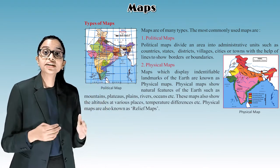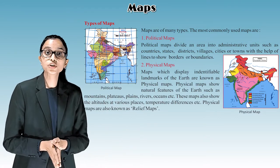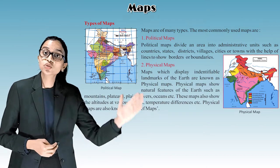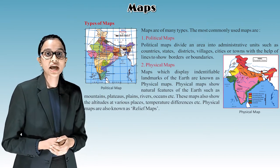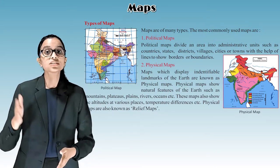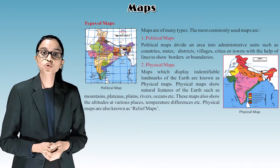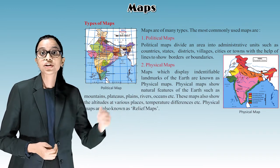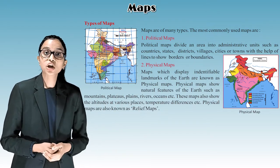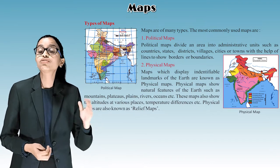Maps which display identifiable landmarks of the earth are known as physical maps. Physical maps show natural features of the earth such as mountains, plateaus, plains, rivers, oceans, etc. These maps also show the altitudes at various places, temperature differences, etc. Physical maps are also known as relief maps.